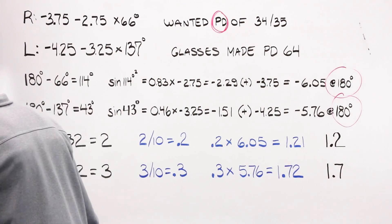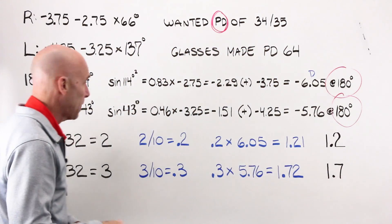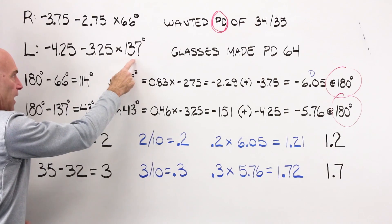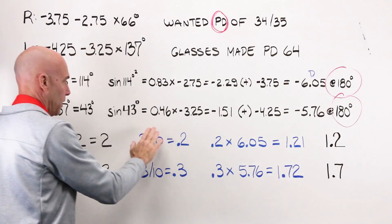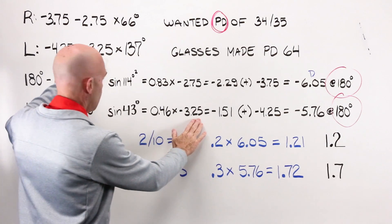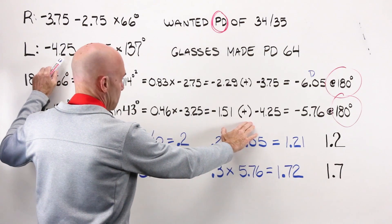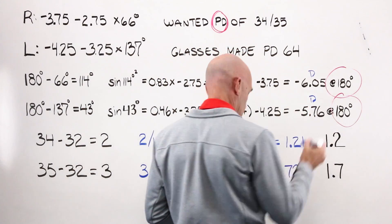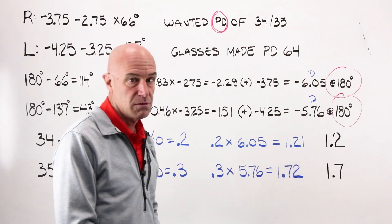There's my blue marker — so this is one of my D's here. Power in oblique meridians formula again: I need 180, I have 137 — a difference of 43 degrees. The sine of 43 degrees squared is 0.46. 0.46 multiplied times my cylinder value gives me minus 1.51, which I then add to my sphere value, giving me minus 5.76 at 180 degrees. P equals HCM times D — there's my D for my right, there's the D for my left.